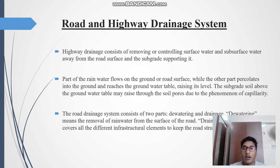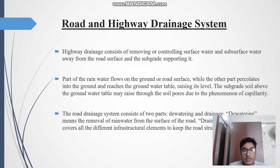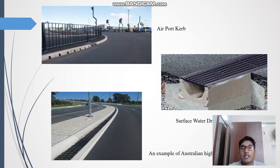The highway drain system consists of removing or controlling surface water and subsurface water away from the road surface and the subgrade supporting it. During rain, part of the rainwater flows on the ground or road surface while the other part percolates into the ground and raises the groundwater table. The subgrade soil above the groundwater table may rise through soil pores due to capillarity, resulting in pavement failure. The drainage system consists of two parts: dewatering, meaning removal of rainwater from the subsurface, and drainage, covering all infrastructure elements to keep the road surface dry. Some conventional drainage systems include airport curbs, surface drainage systems, and storage hybrid drain systems.